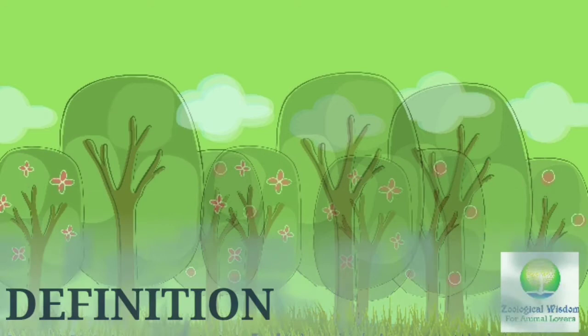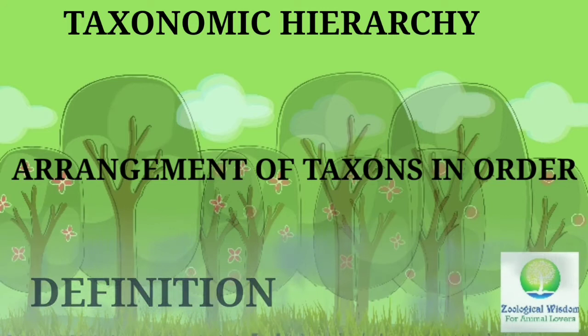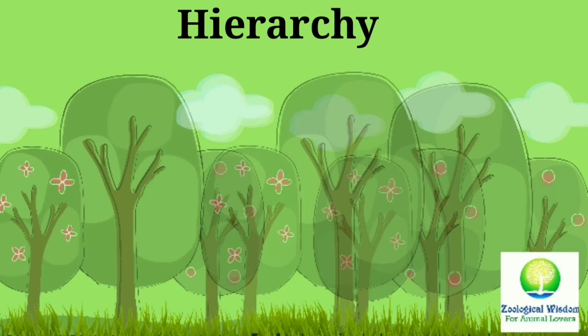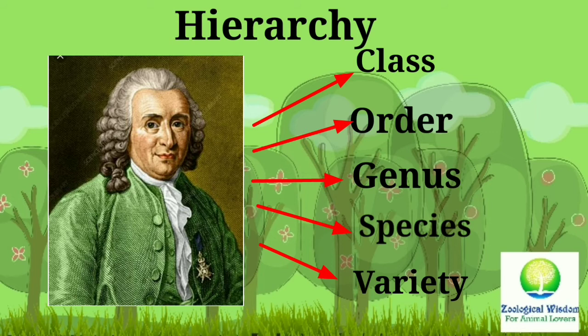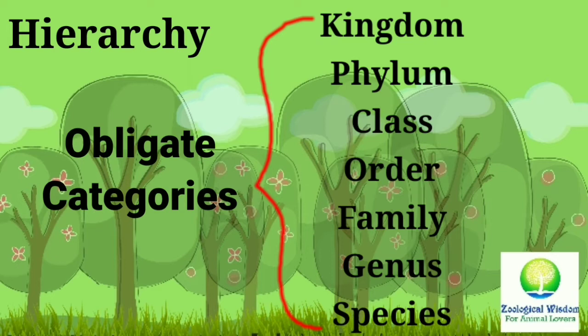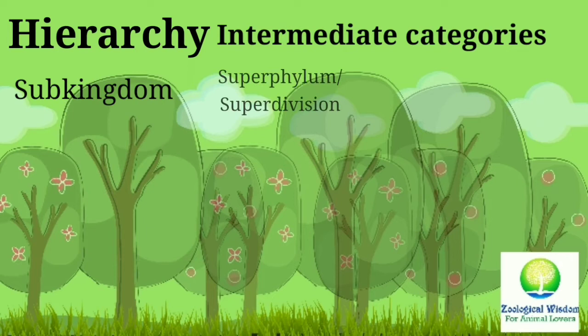Taxonomic Hierarchy is the sequence or arrangement of taxonomic categories or taxons in descending order during the classification of organisms. The hierarchy was first given by Linnaeus, who used only 5 categories: class, order, genus, species, and variety. Variety was later discarded and 3 more categories were added, creating 7 obligate categories. Additional categories have also been added, called intermediate categories.